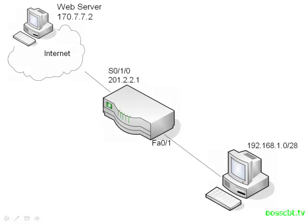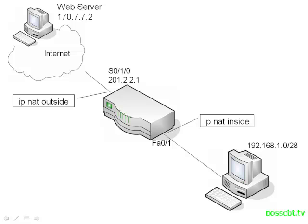By now you're probably familiar with this NAT diagram, so let's begin with our configurations. One of the most common mistakes is to forget to define your inside and outside NAT interfaces. Everyone is so focused on the actual NAT statements themselves — creating the pool, maybe an access list — that we forget to jump into interface mode and issue these commands. So check those first. Without these, nothing's going to work.